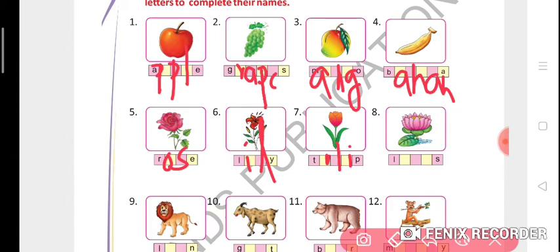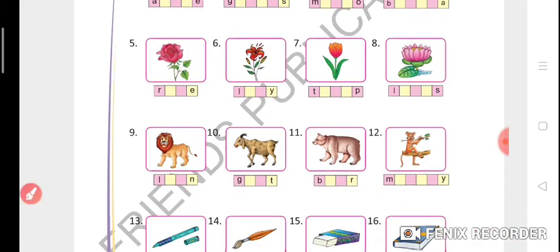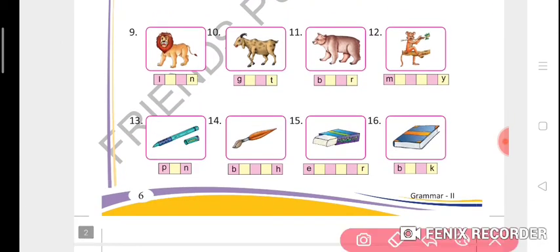Ninth, lion: L-I-O-N. Tenth, goat: G-O-A-T. Eleventh, bear: B-E-A-R. Twelfth, monkey: M-O-N-K-E-Y. Thirteenth, pen: P-E-N.